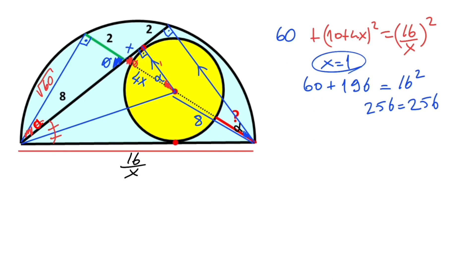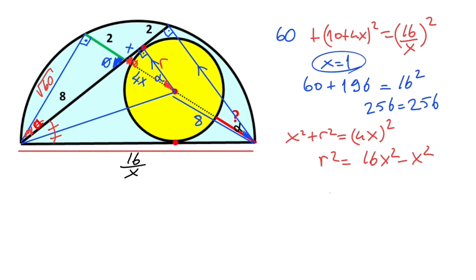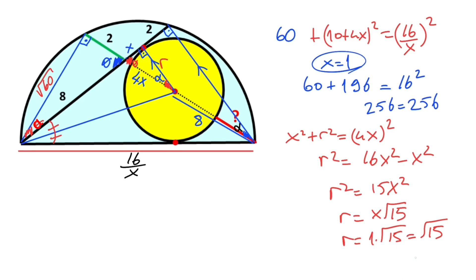Let's call the radius of the yellow circle r. For this triangle, if we apply the Pythagorean theorem: X squared plus r squared equals (4X) whole squared. So r squared equals 16X squared minus X squared, therefore r squared equals 15X squared, and r equals X times root 15. We know X equals 1, so r equals root 15.